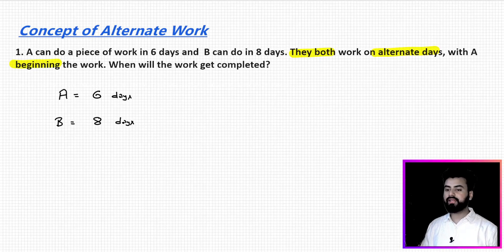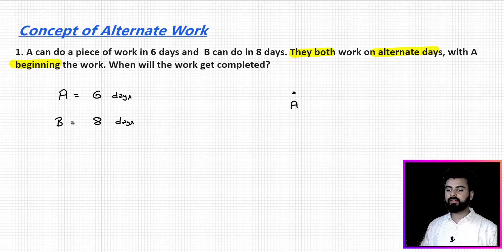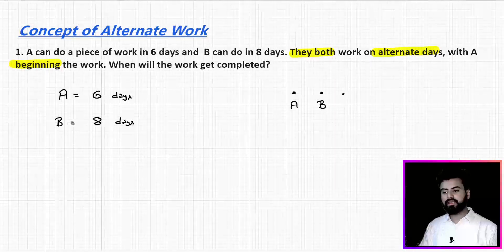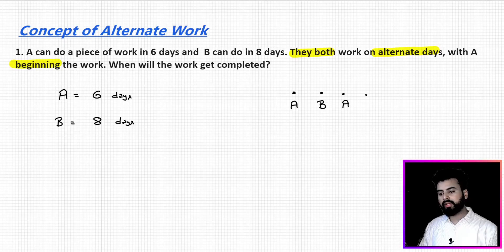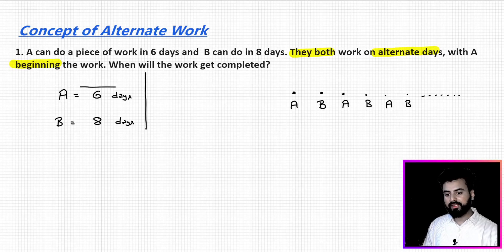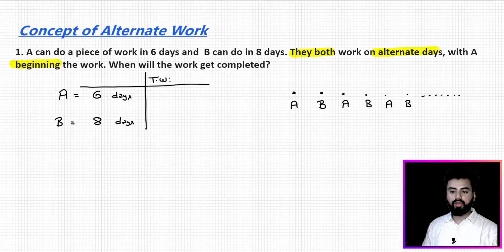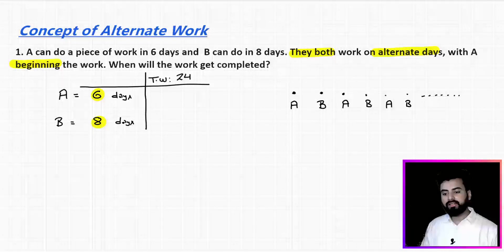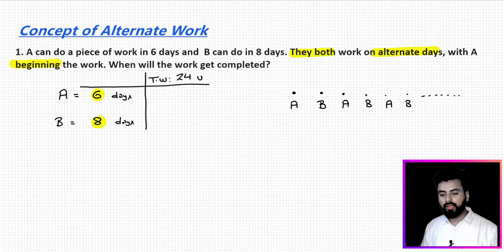So who starts the work? A starts on day 1. On the second day, A will not come — B will do the job. Then the same pattern repeats: A, B, A, B, and so on until the work is completed. The first step — which most of us already know — is to assume the value of total work by taking the LCM of 6 and 8, which is 24. So we assume total work as 24 units.